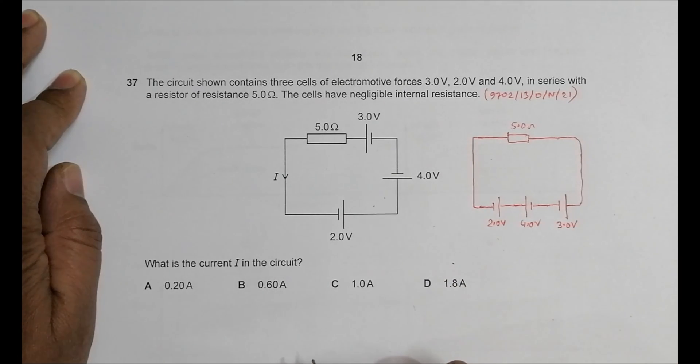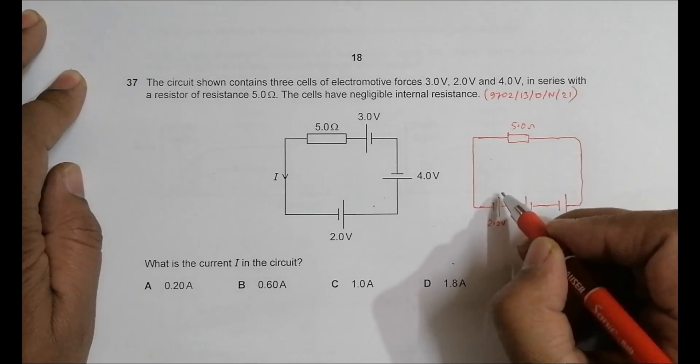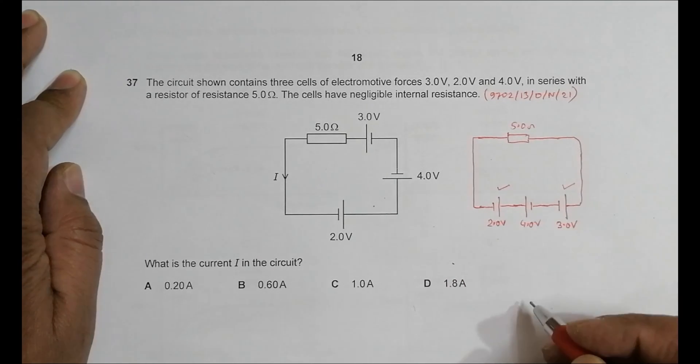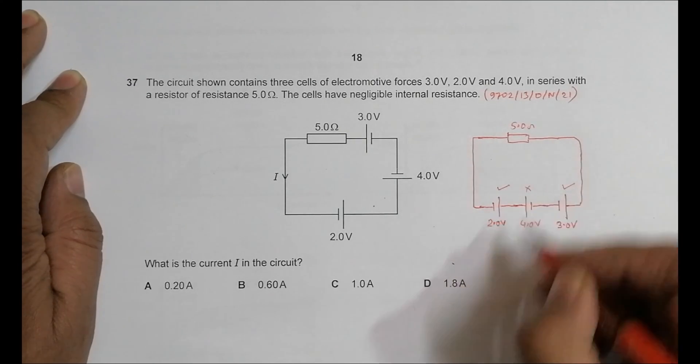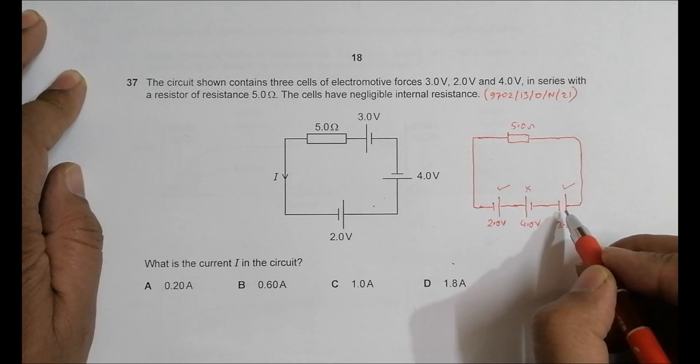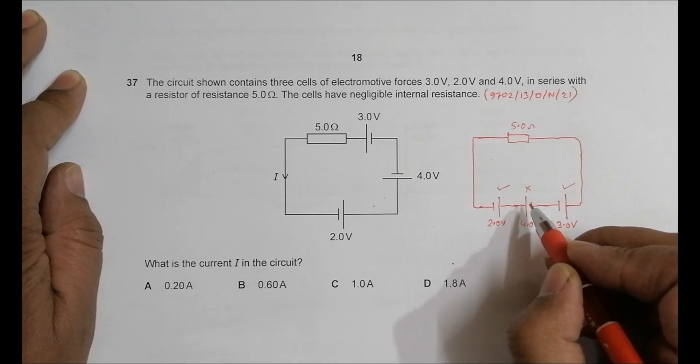Now all the cells are in the same row. When we look at this, these cells are in the same direction, but this one is in the reverse direction. So the EMF of these two will add and the EMF of this will subtract.